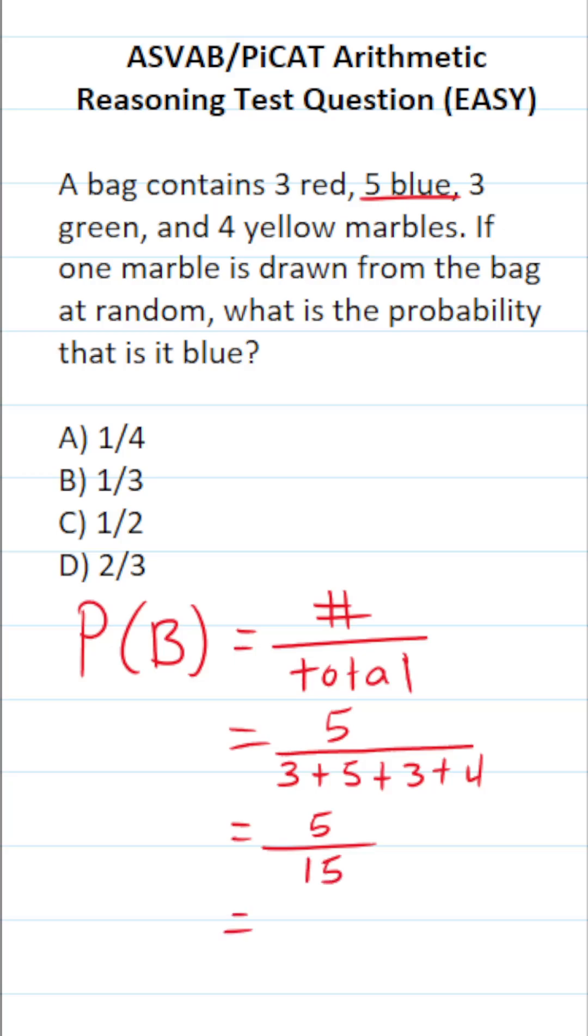And you're probably saying, why isn't this an answer choice? Because we can reduce five and fifteen by a common factor of five. Five divided by five is one.